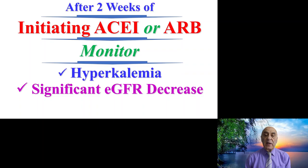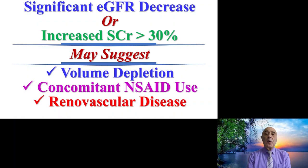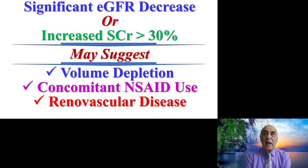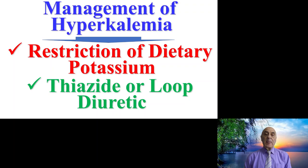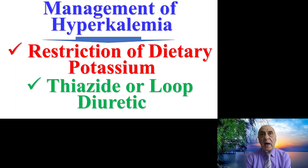If there is a significant decrease in the glomerular filtration rate or if the serum creatinine exceeds 30 percent, this may suggest that the patient is suffering from volume depletion, is using an NSAID (a non-steroidal anti-inflammatory drug), or possibly has renal vascular disease. Hyperkalemia can be managed by restricting dietary potassium and/or by using a thiazide diuretic like hydrochlorothiazide or a loop diuretic like furosemide.